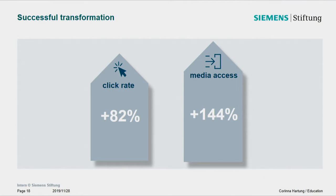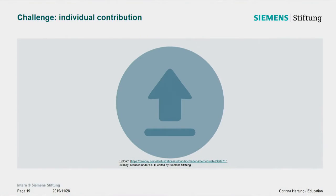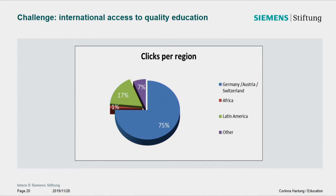The conversion to a pure OER portal that doesn't require registration was a huge success: although the number of media fell by nearly half, media access and click rates rose significantly. Quality remains critical — at present users cannot upload media because the quality check would be too costly and time-consuming. We also face a major challenge: while many media are available in three languages and we promote the portal in Africa and Latin America, click rates in those regions are still very low.